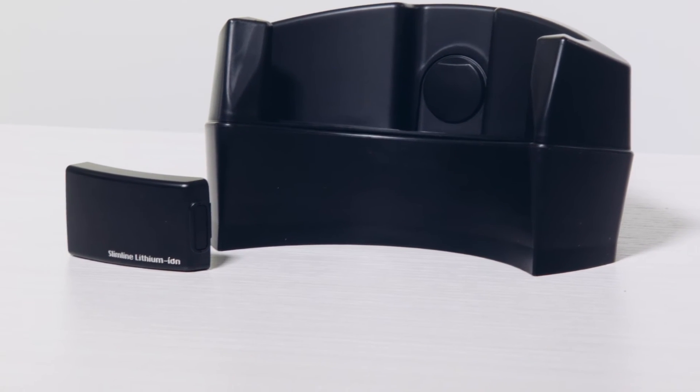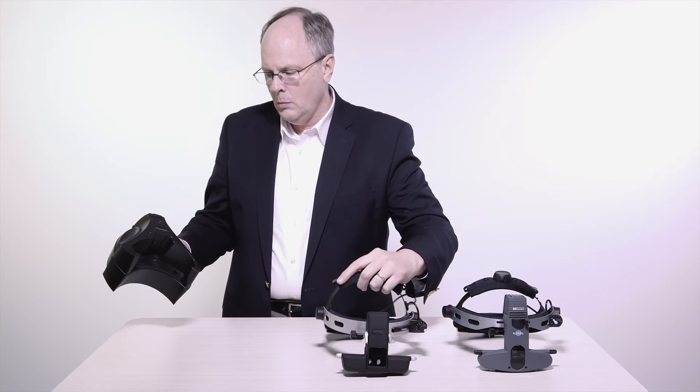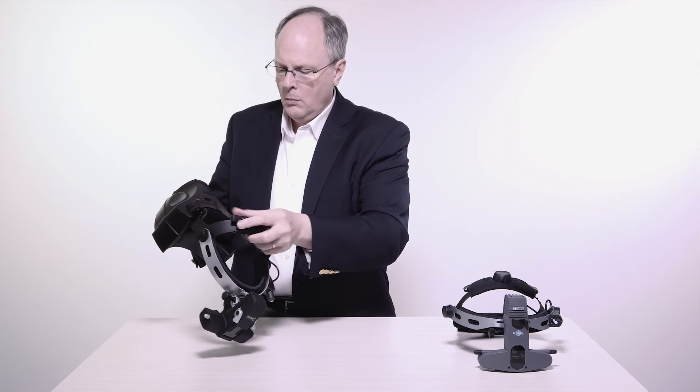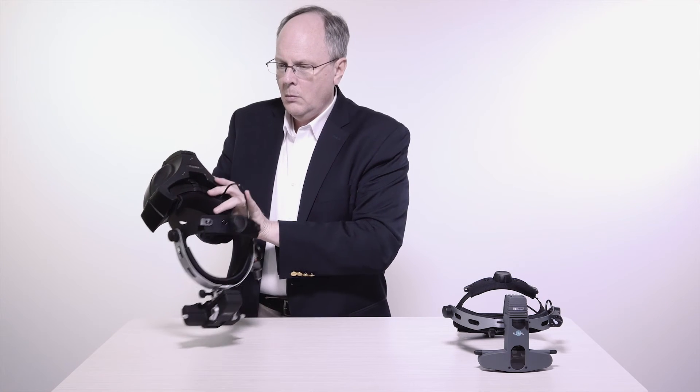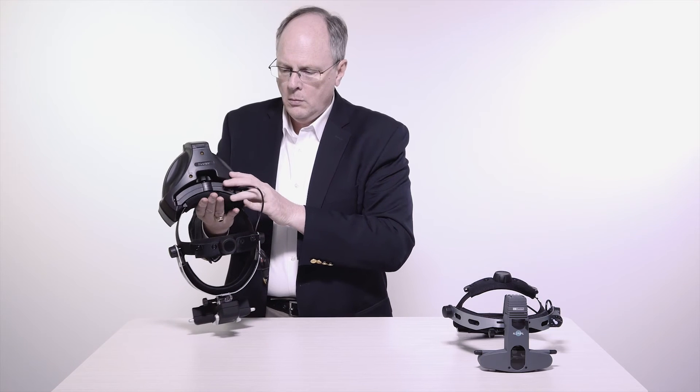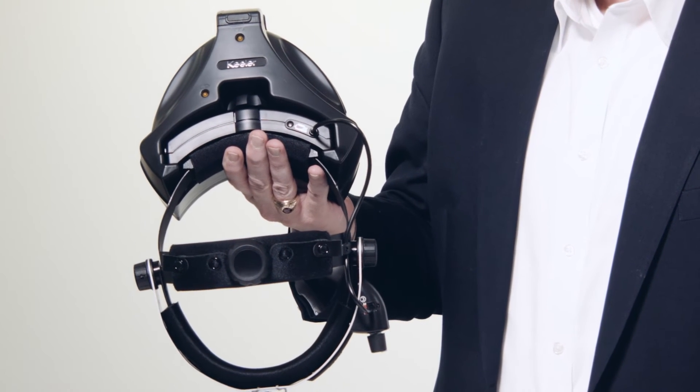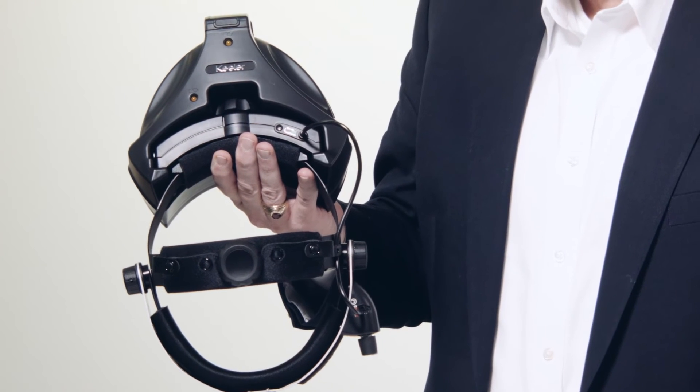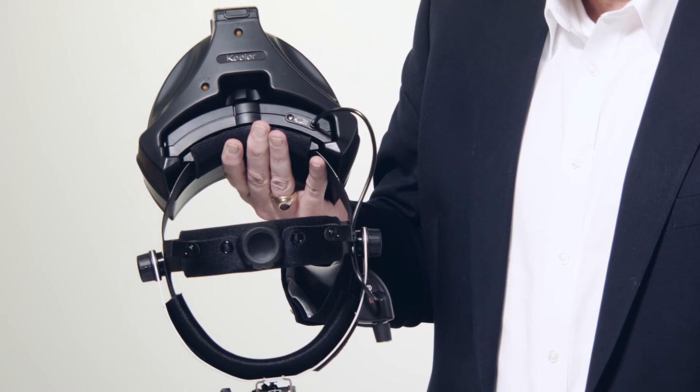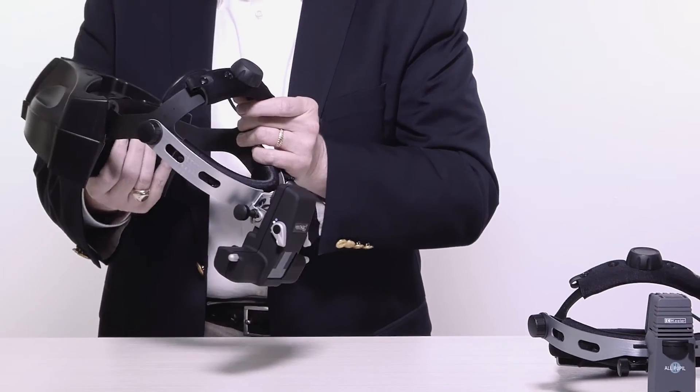The docking station can sit on a table or be mounted on a wall. It is powered using our universal switch mode power supply from 100 to 240 volts. The indirect is recharged and automatically turns off the illumination when you place it back into its charging station. Both batteries are charged simultaneously.